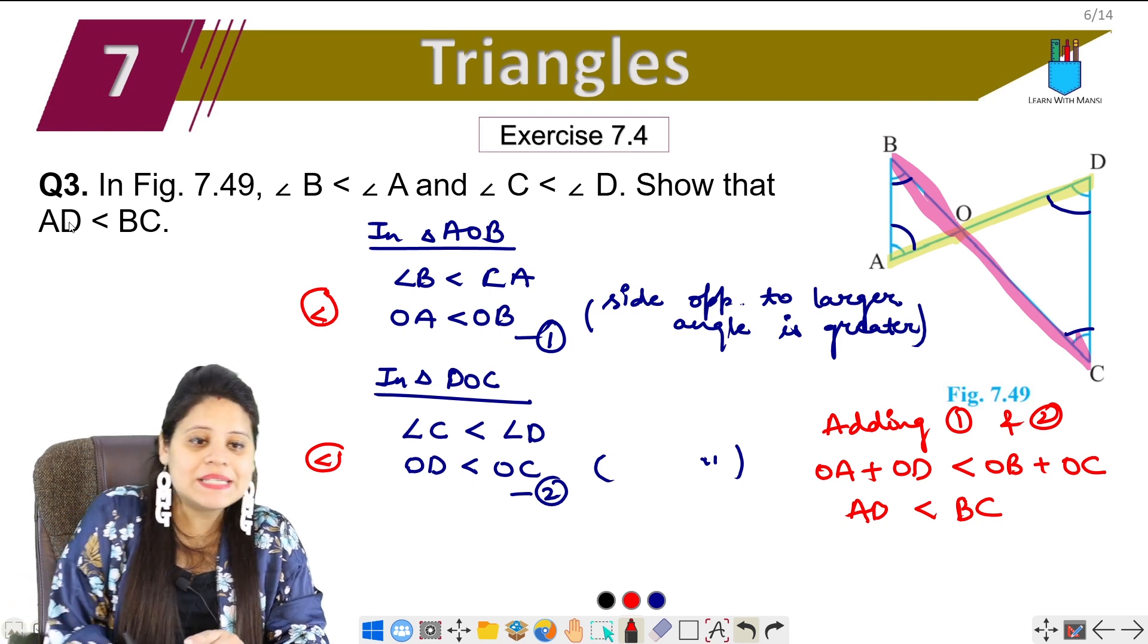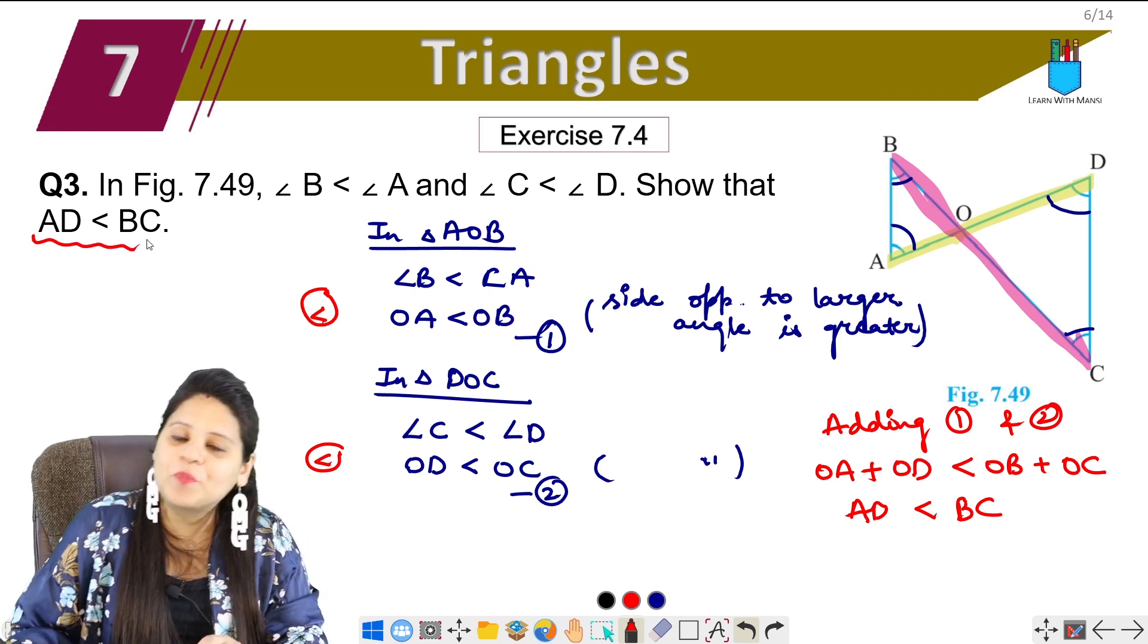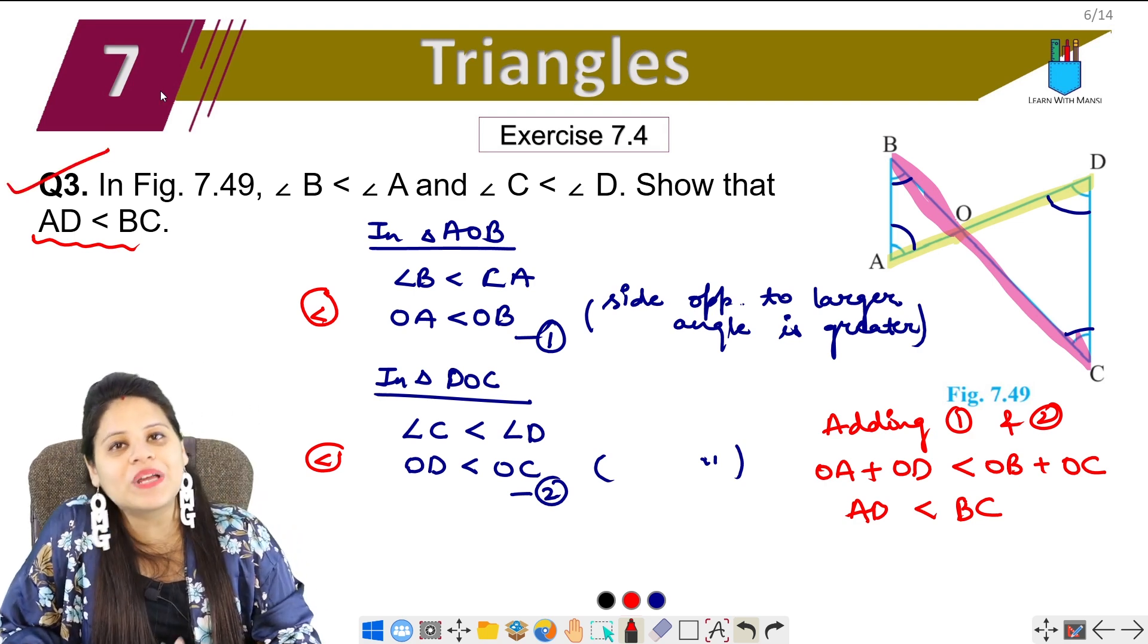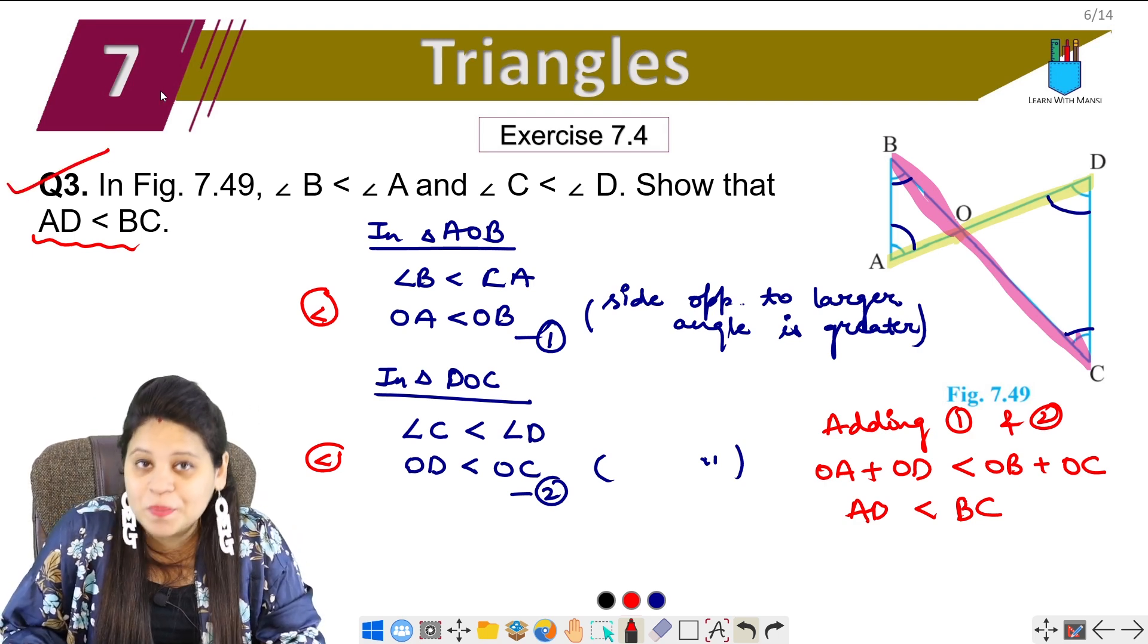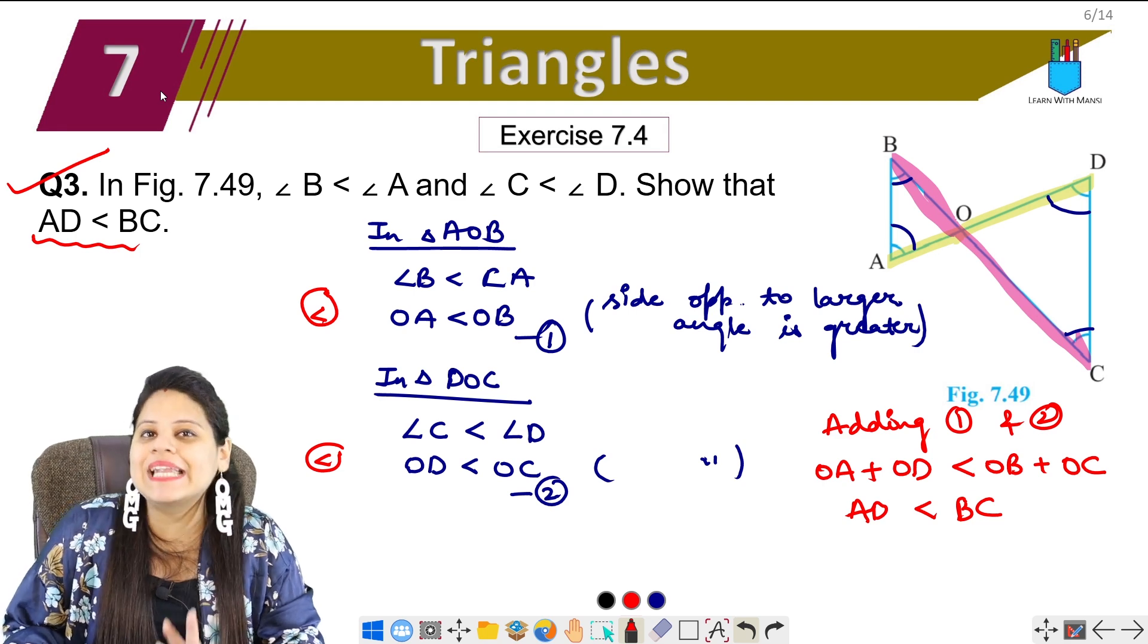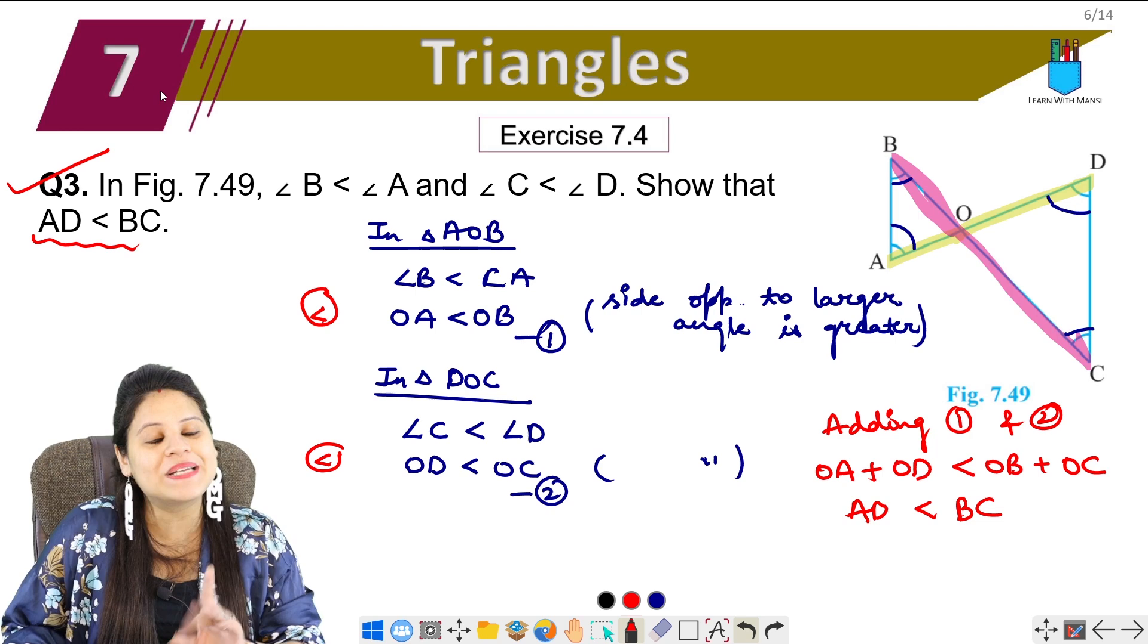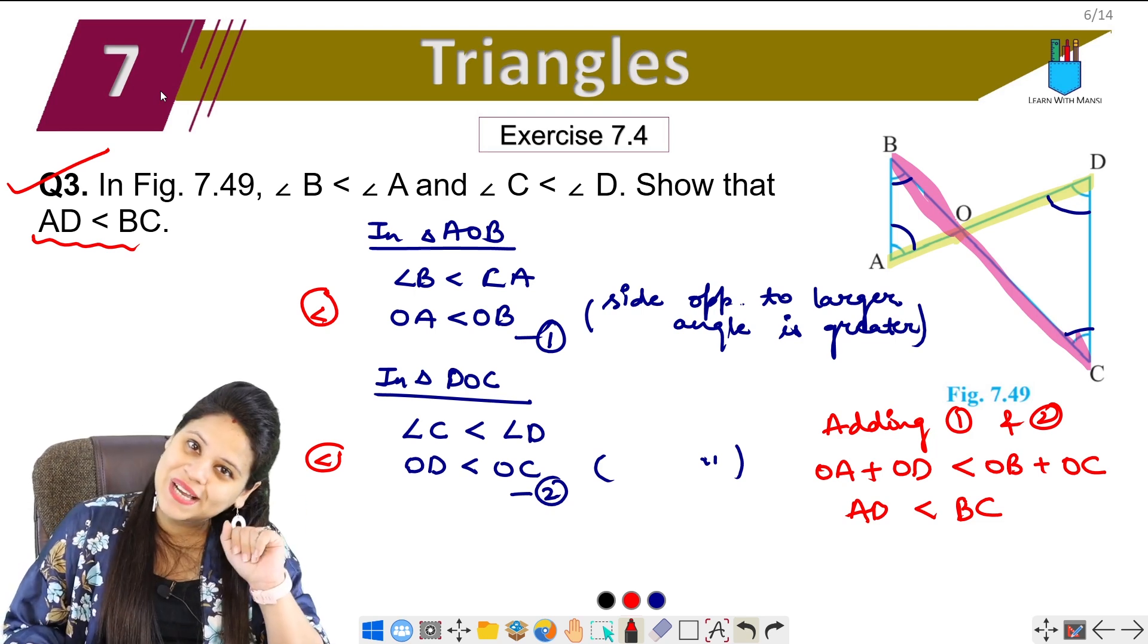So AD is less than BC. This is what we had to prove in the question. Clear? This was our third question of exercise 7.4. Now we will see our next question in the next video, which will be found in the description below. And if you haven't subscribed to the channel yet, please make sure to subscribe. Bye-bye for now.